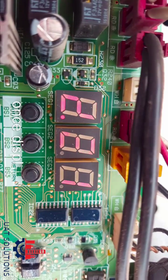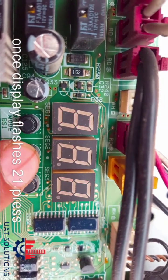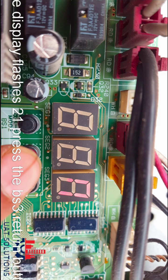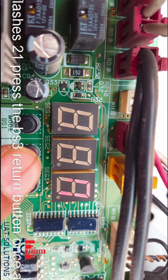Once the display flashes 21, press the BS3 return button once. Zero will appear on the screen, which means the vacuum mode or refrigerant recovery mode is currently deactivated.